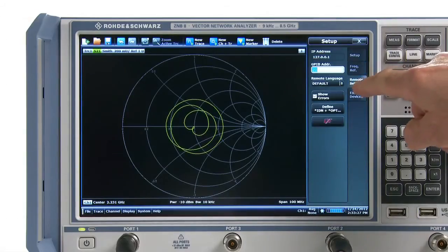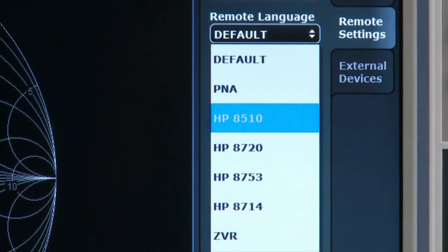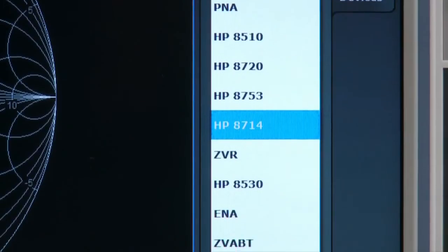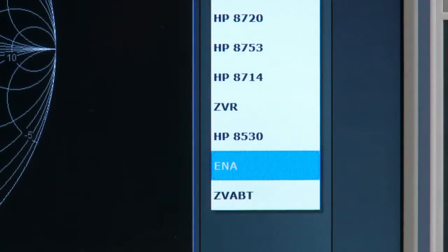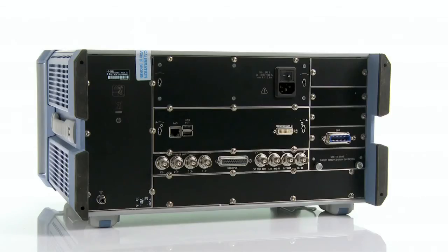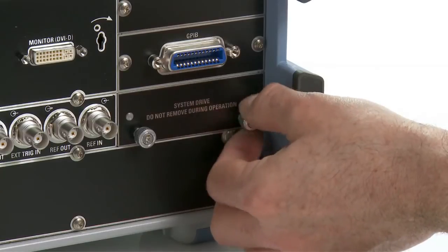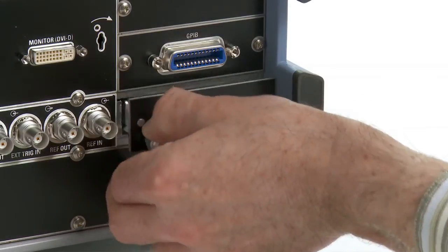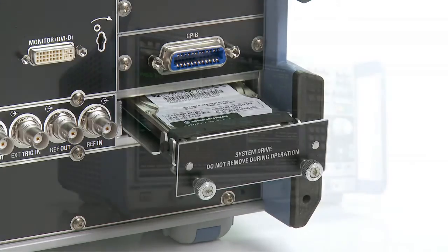The ZNB is to replace an obsolete analyzer in an automatic test system. Nothing could be simpler. All you need to do is select the previous instrument's remote control command set from a list. The ZNB has a modular hardware design, so it will keep up with technological developments for a long time to come. The controller, control interfaces, power supply and hard drive are designed as plug-in modules for convenient replacement. This also makes it easy to accommodate new technologies and performance enhancements.